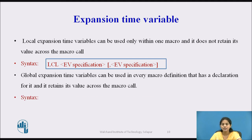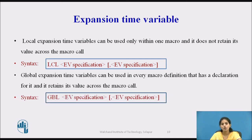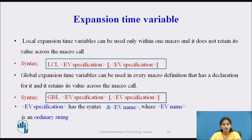The syntax for creating a global expansion time variable is: use the word GBL followed by the EV specification. The EV specification has the syntax &EV_name, where EV_name is simply an ordinary string.